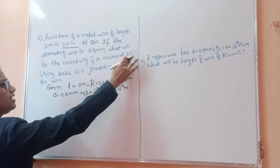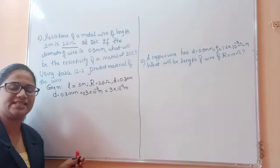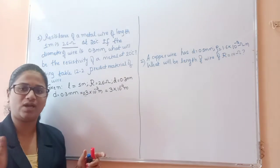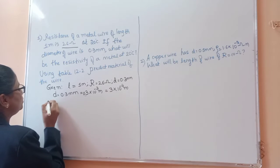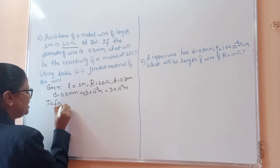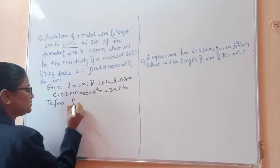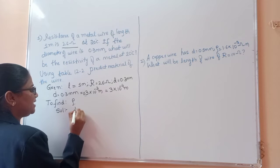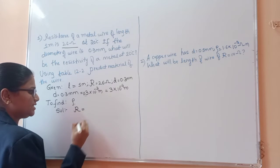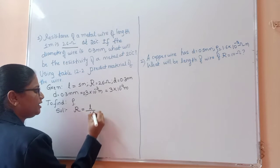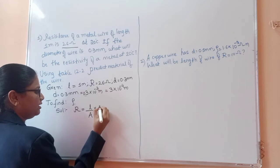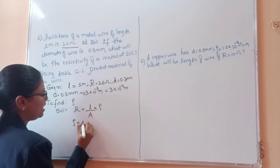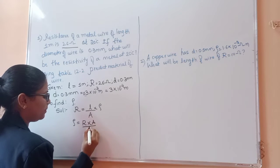They also gave temperature as 20 degrees Celsius, which indirectly means the measurement is at a constant temperature. What we have to find is the resistivity, that is rho.